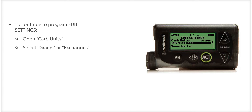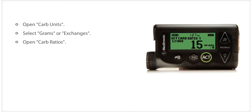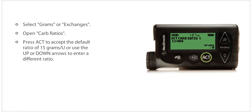Next, you will want to enter the insulin to carbohydrate ratio you want to use. On the Edit Settings screen, CARB Ratios is highlighted. Press ACT. You will see either Set CARB Ratio 1, if you selected grams, or Set Exchange Ratio 1, if you selected Exchanges. In this example, the Set CARB Ratio screen is displayed. Enter a practice setting for the CARB ratio, then press ACT.